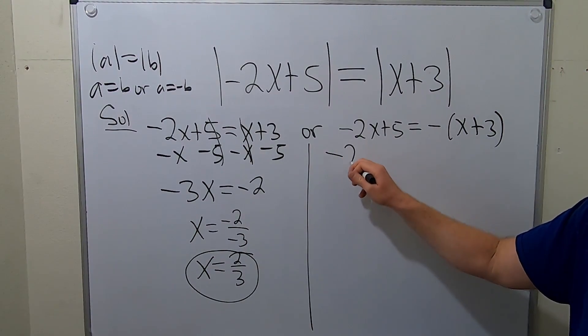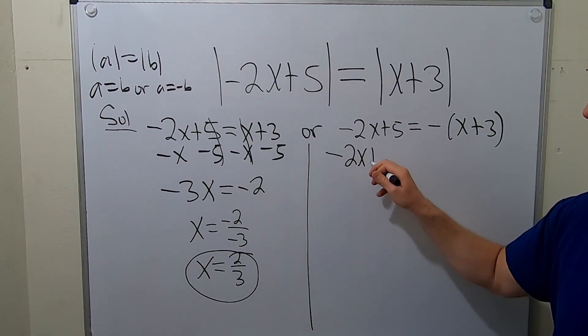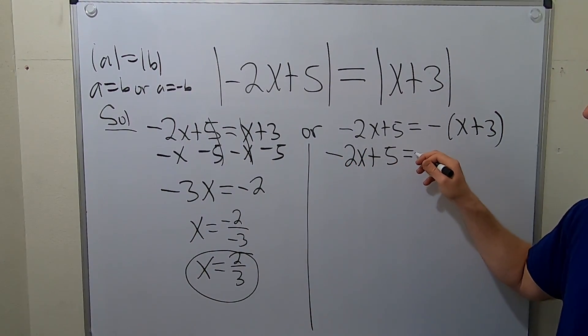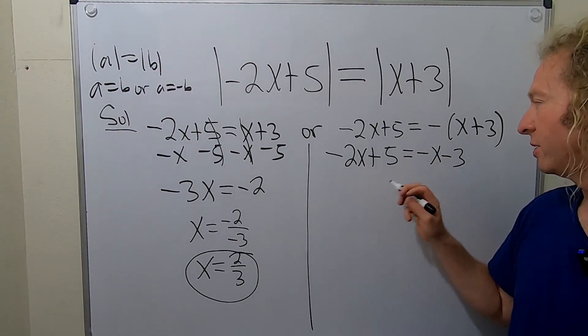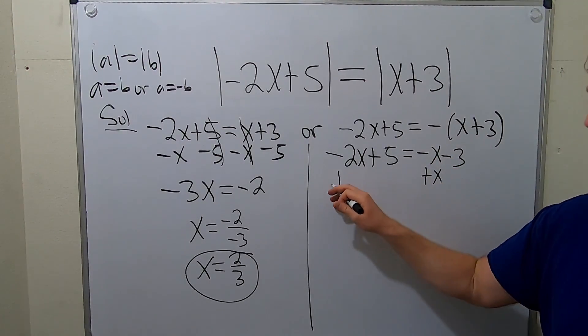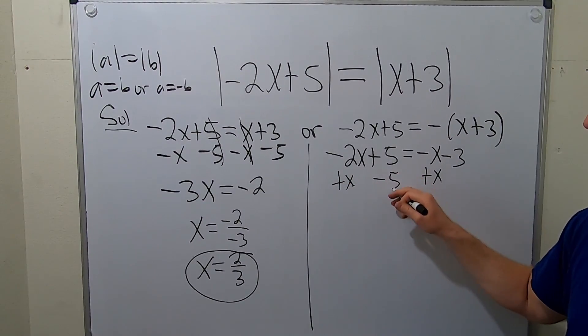Same thing here. Negative 2x plus 5 equals minus x minus 3. In this case, we'll add x to both sides. Plus x, plus x. And subtract 5. Minus 5, minus 5.